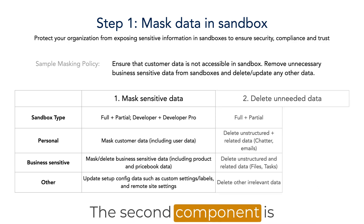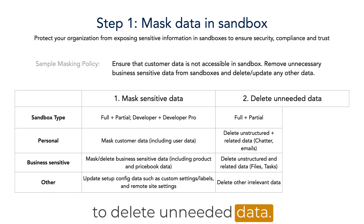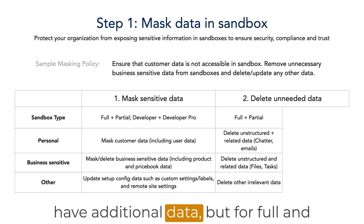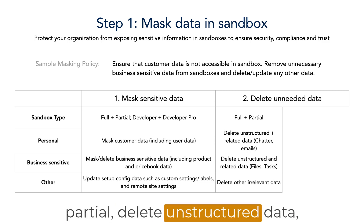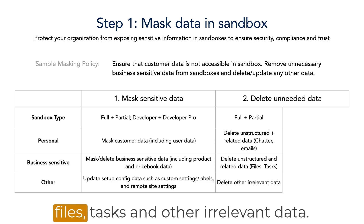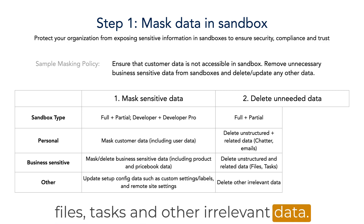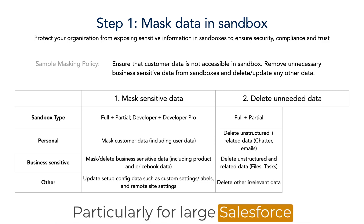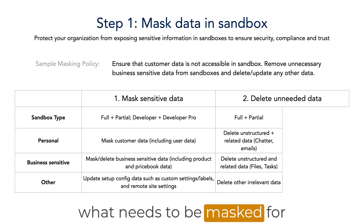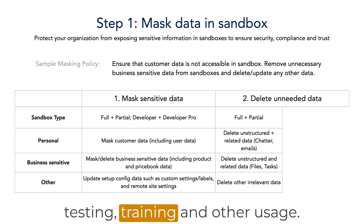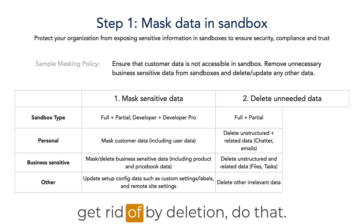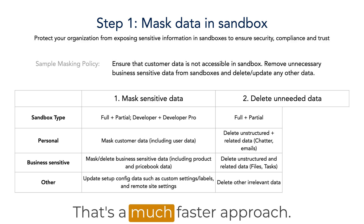The second component is to delete unneeded data. Obviously, your dev and dev pro don't have additional data. But for full and partial, delete unstructured data — attachments, email history, chatter, files, tasks, and other irrelevant data. Particularly for large Salesforce orgs, you are better off masking what needs to be masked for testing, training, and other usage. Anything else that you can get rid of by deletion, do that. That's a much faster approach.